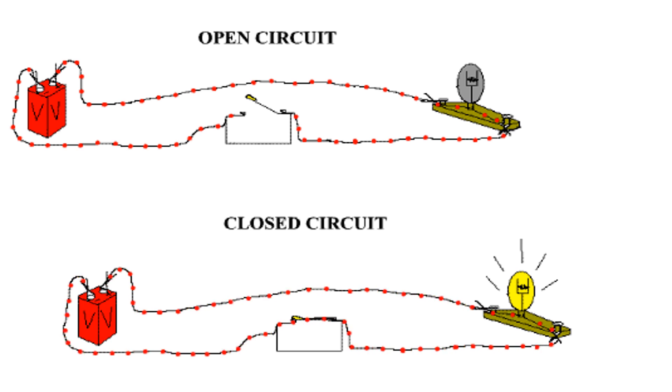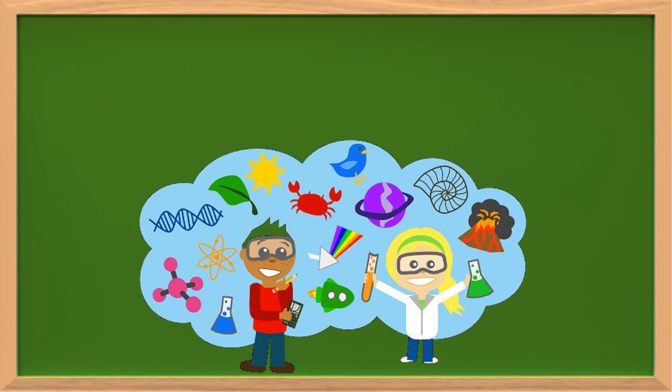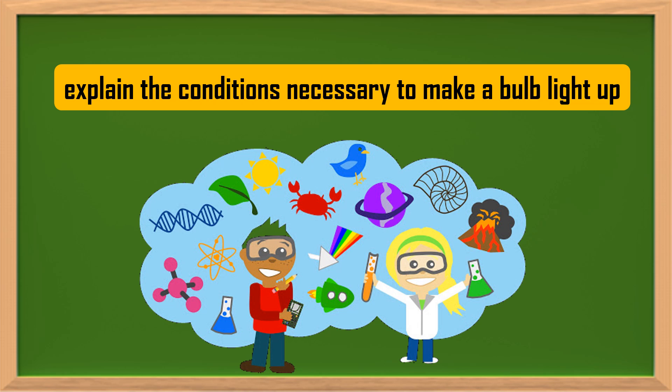Grade 5 learners, for you to understand better the difference between open circuits and closed circuits, refer in this figures. The activity that you are going to perform will explain the conditions necessary to make a bulb light up.